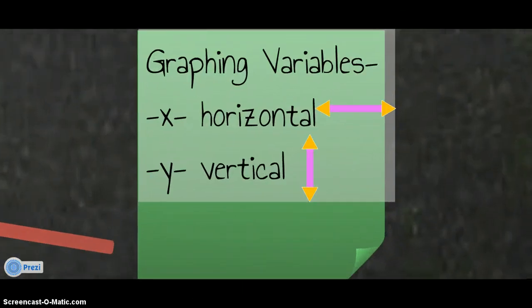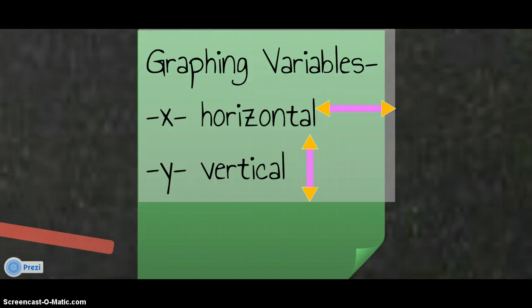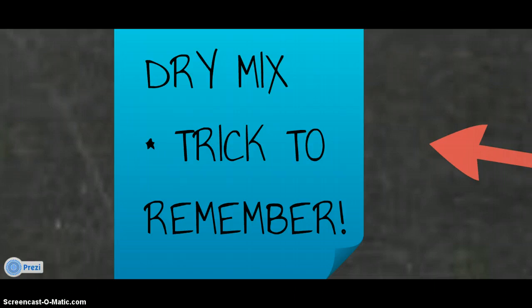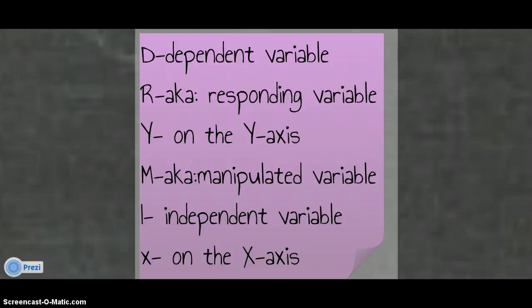Whenever we collect data, we often want to make graphs so that we can analyze the information. We need to know the parts of a graph: we have the x-axis and the y-axis. The x-axis is the horizontal line that runs sideways, and the y-axis is the vertical line that runs straight up and down. To remember where the variables belong on a graph, we use a trick called DRY MIX.